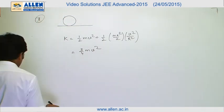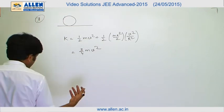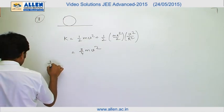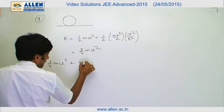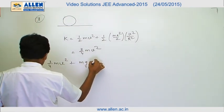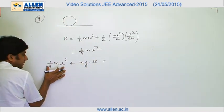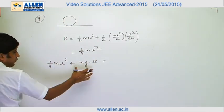We get that ¾mv² equals to mg into 30. 30 is the height. This is initial kinetic energy, this is total kinetic energy, this is work done by gravity equals to total kinetic energy that is K, which is same in both situations.